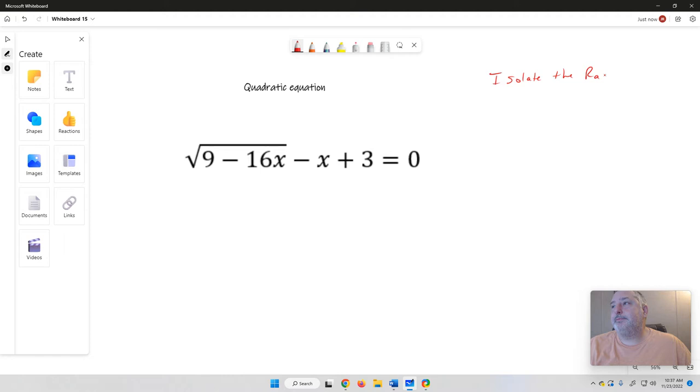So basically what I'm going to do here is I'm going to add x, I'm going to subtract 3 from each side. So that gives me the square root of 9 minus 16x equals x minus 3.